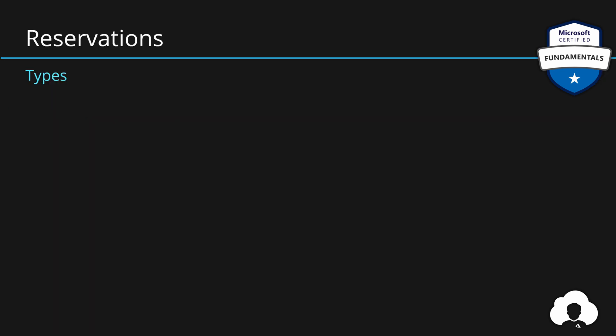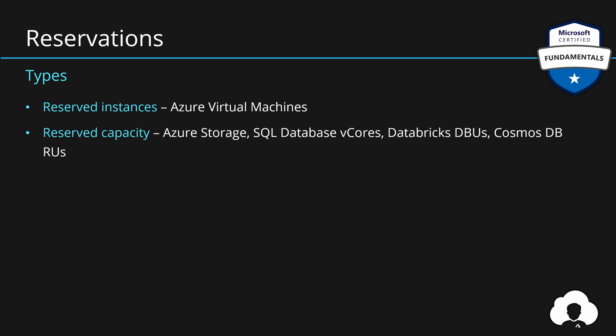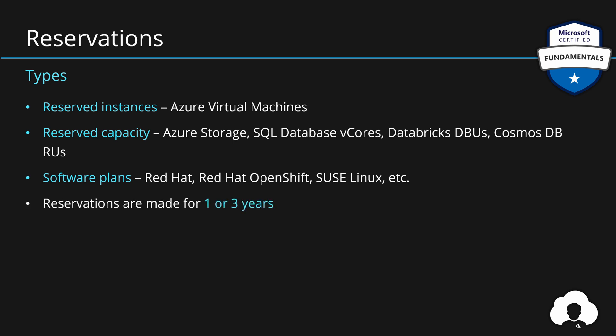There are three types of reservations in Azure. First, reserved instances — reserving the SKU and compute power of your virtual machines. Second, reserved capacity for platform-as-a-service offerings like Azure Storage, SQL databases, Databricks units, Cosmos DB RUs, and more. Third, software plans — reserving licensing costs for operating systems like Red Hat. These reservations are made for one or three year periods.